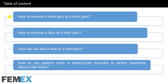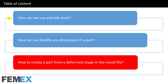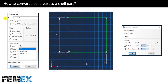This is the table of contents. I will talk about how to convert a solid part to a shell part, how to remove a face of a shell part, how to add a face to a shell part, how to use pattern tools in sketch and part modules to define repetitive objects like holes, how to use extrude tools, how to modify any dimension of a part, and how to create a part from a deformed shape in the result file.